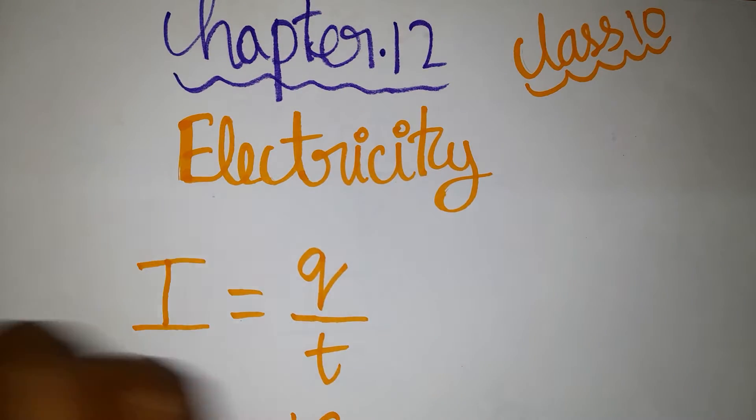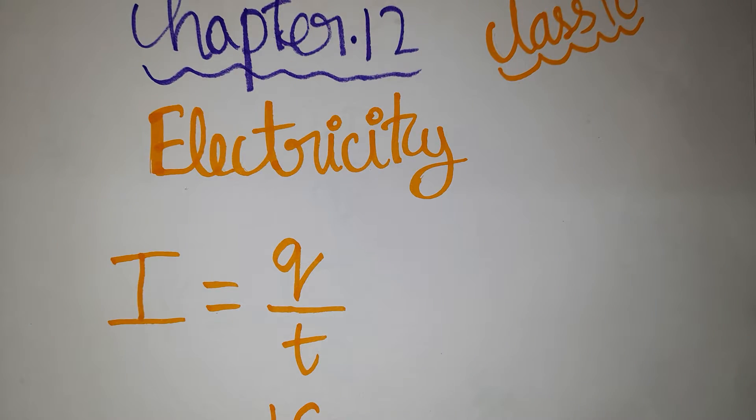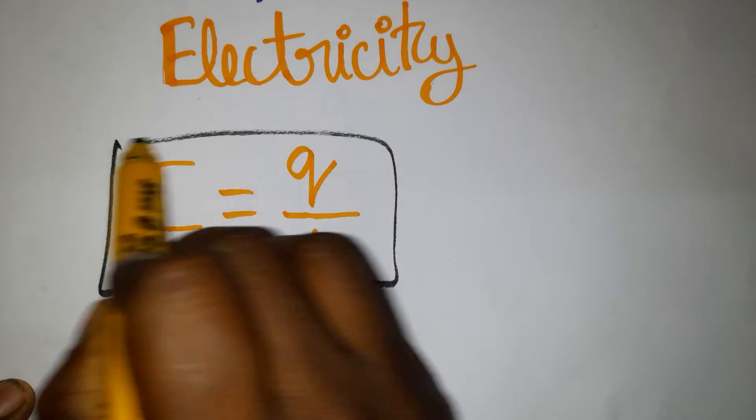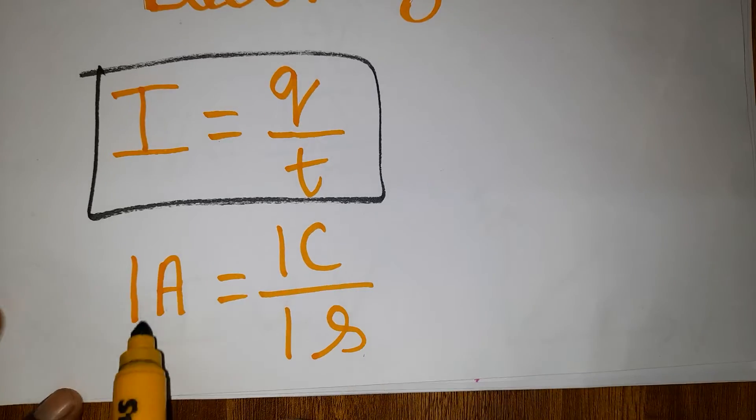Hello students, today we are going to discuss Class 12 Physics current electricity formula sheet. First, current is the rate of flow of charge. One ampere equals one coulomb per second.